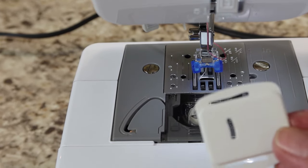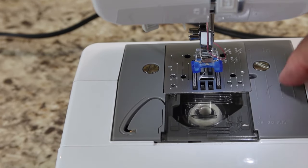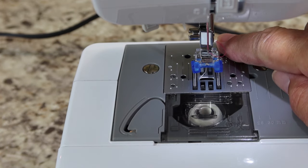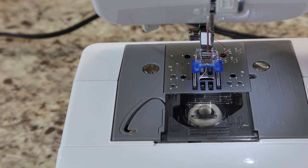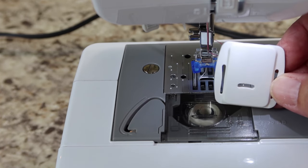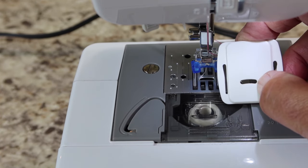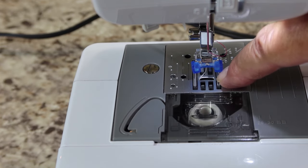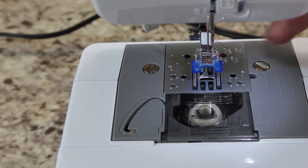Now we're going to put our feed dog cover on. These metal things right here with the teeth, that's what feeds your fabric through. When you're sewing on a button, you don't want your fabric going through there. So hold your cover so that it looks like a frowny face. The frowny face right here needs to match up with the little frowny face in your foot plate there.